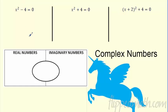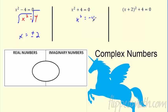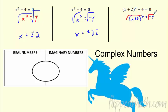Quick review: last section we got pretty good at solving these. You'd bring four to both sides and square root both sides, getting plus or minus two. Then I mixed it up — what if you subtract four from both sides? You get a negative under the square root. We'd get plus or minus 2i, since 2i times 2i equals negative four. Subtracting two from both sides gave us x equals negative two plus or minus 2i.